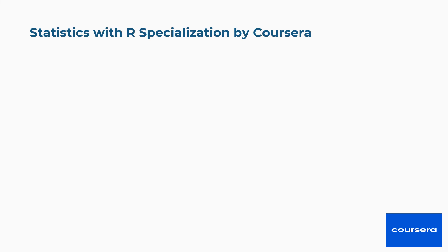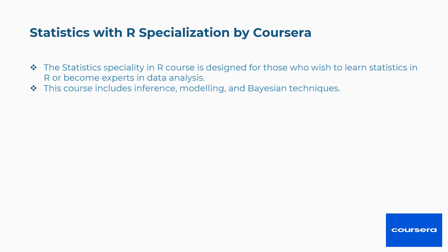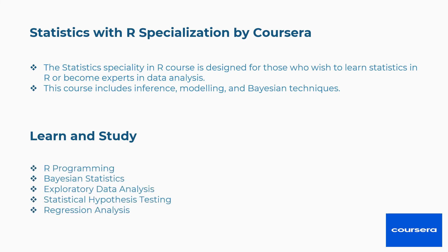Eighth is Statistics with R Specialization by Coursera. This course is designed for those who wish to learn statistics in R or become experts in data analysis. It includes inference, modeling, and Bayesian techniques. Concepts covered include R programming, Bayesian statistics, exploratory data analysis, statistical hypothesis testing, regression analysis, and more.